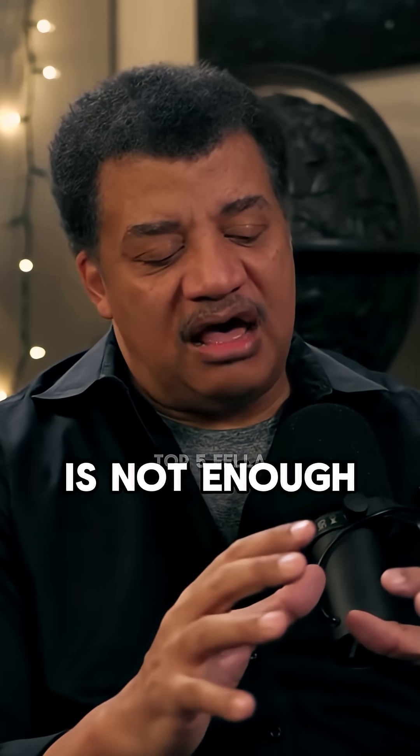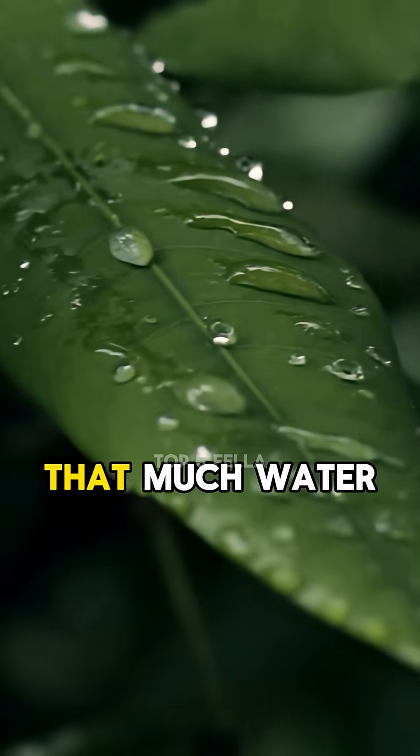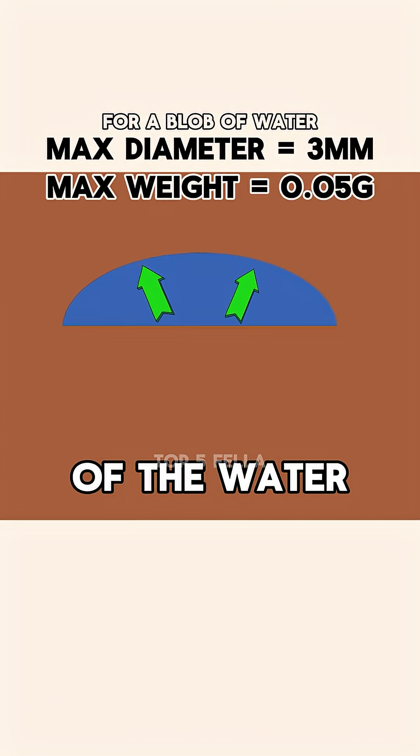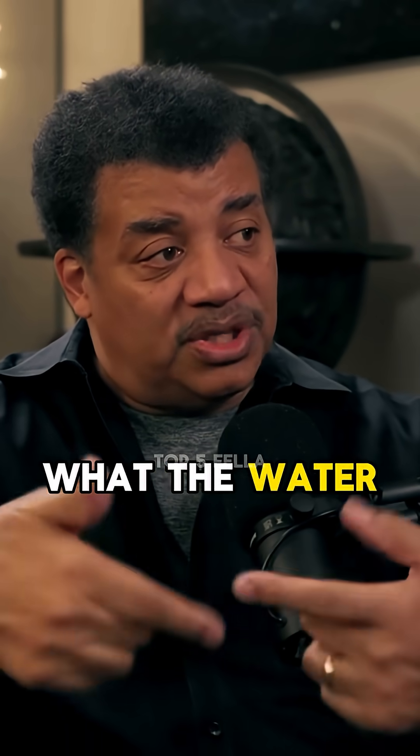That surface tension is not enough to ball up this much water, but it is strong enough to ball up that much water. Above a certain blob of water, the weight of the water becomes greater than the surface tension, and it can't hold it out. Those two forces cross in their capacity to influence what the water is doing.